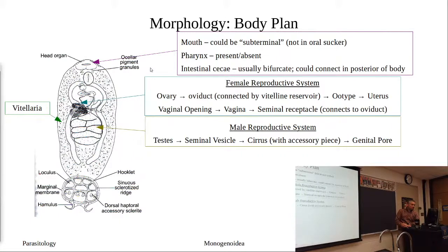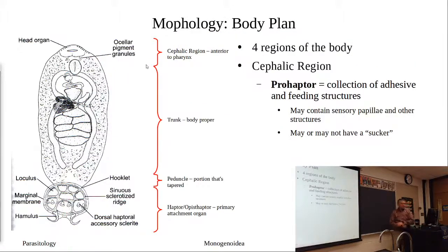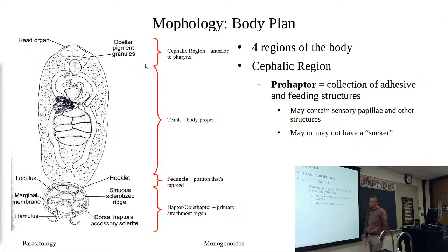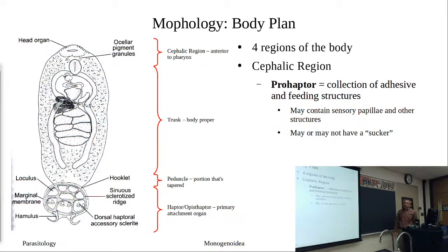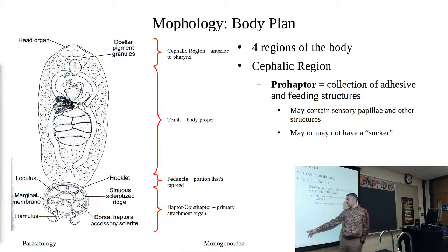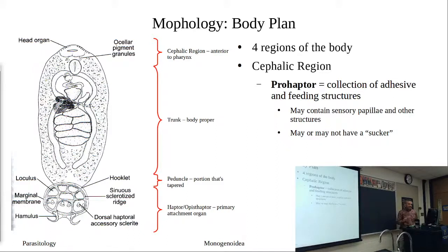Below the cephalic region is the trunk — the body proper. Below that there is a narrowing portion called the peduncle, a term used in various morphological descriptions across the animal and plant worlds. The peduncle leads to the posterior area, which is the haptor or opisthaptor — our primary attachment structure.